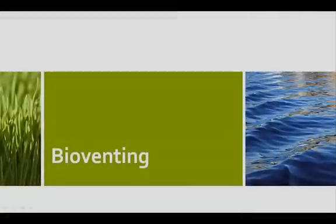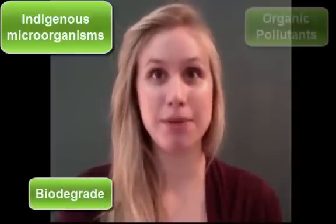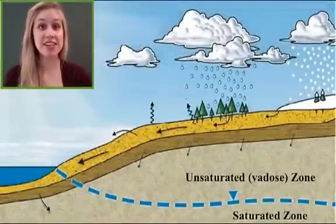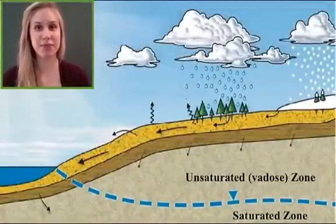Let's start with bioventing. Bioventing is an in situ remediation technology that uses indigenous microorganisms to biodegrade organic pollutants found in the unsaturated zone. Bioventing occurs in the unsaturated zone as you can see below.